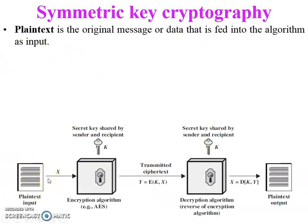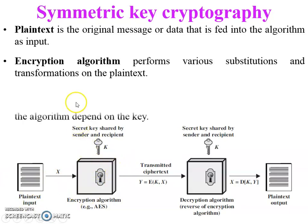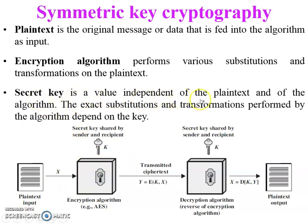The first element, plain text, is the original message or data that is fed into the algorithm as input. If the sender wants to send data to the receiver, they have the original message or plain text. If your data is secure, an attacker or hacker cannot recognize your original plain text message.